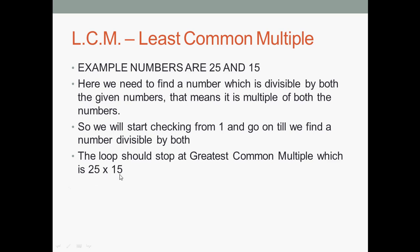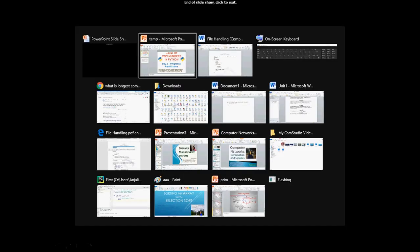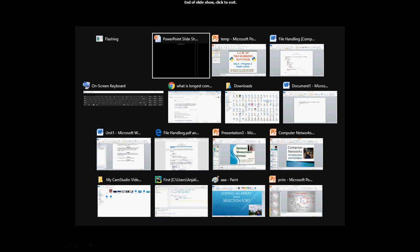The limit is the first number multiplied by the second number — because after that product, that number for sure will be divisible by both 25 and 15. So between 1 and this product, if any number is found that is divisible by both, that will be the Least Common Multiple. If none is found before, the product itself will definitely be divisible by both — that becomes your LCM. But if we find a multiple before that, we should break the loop.